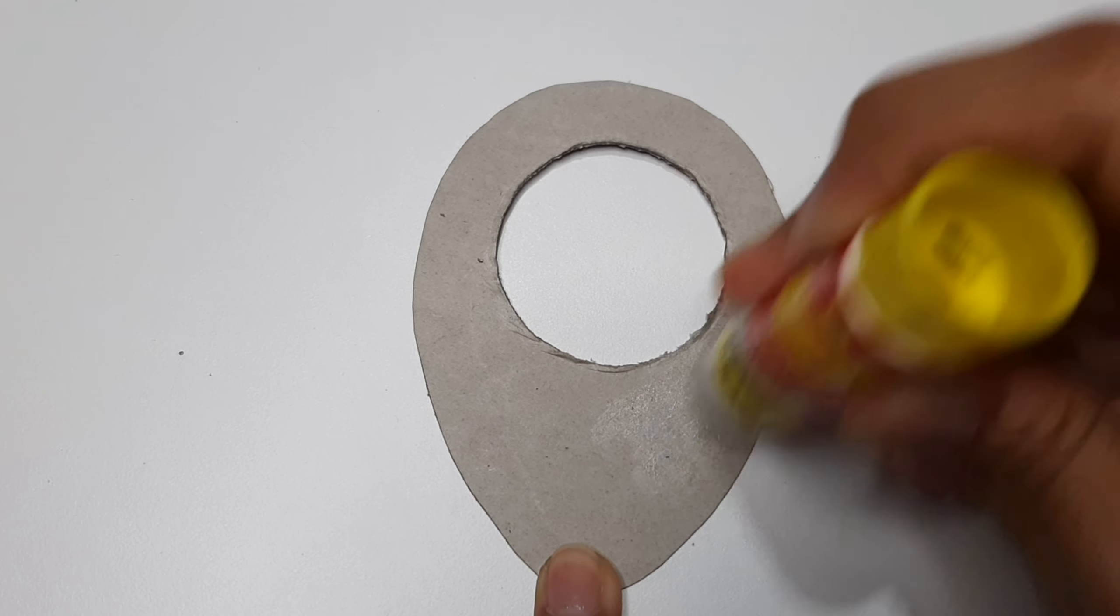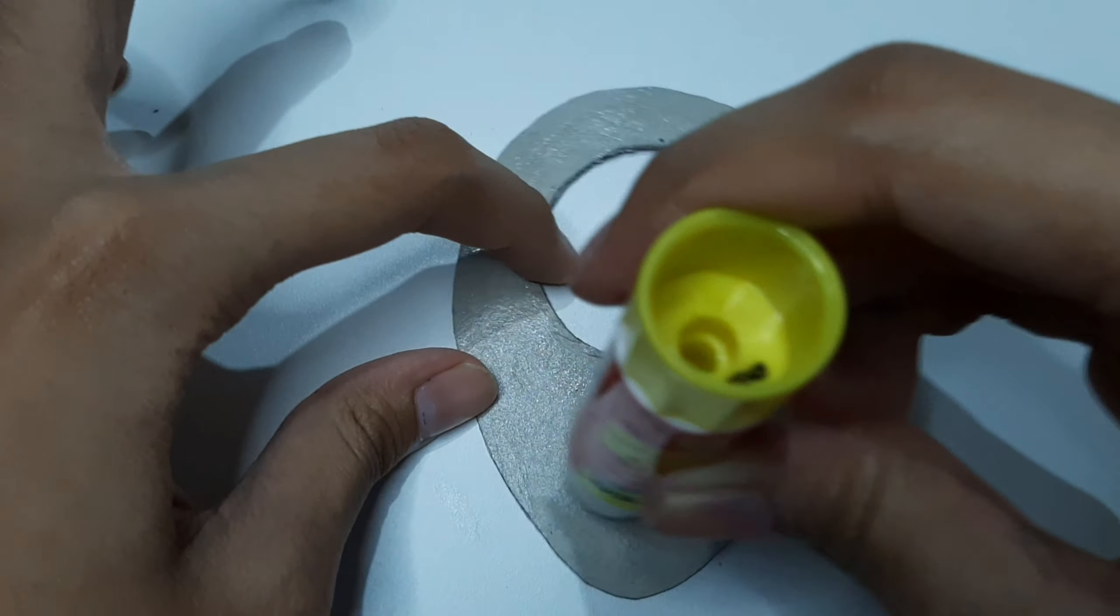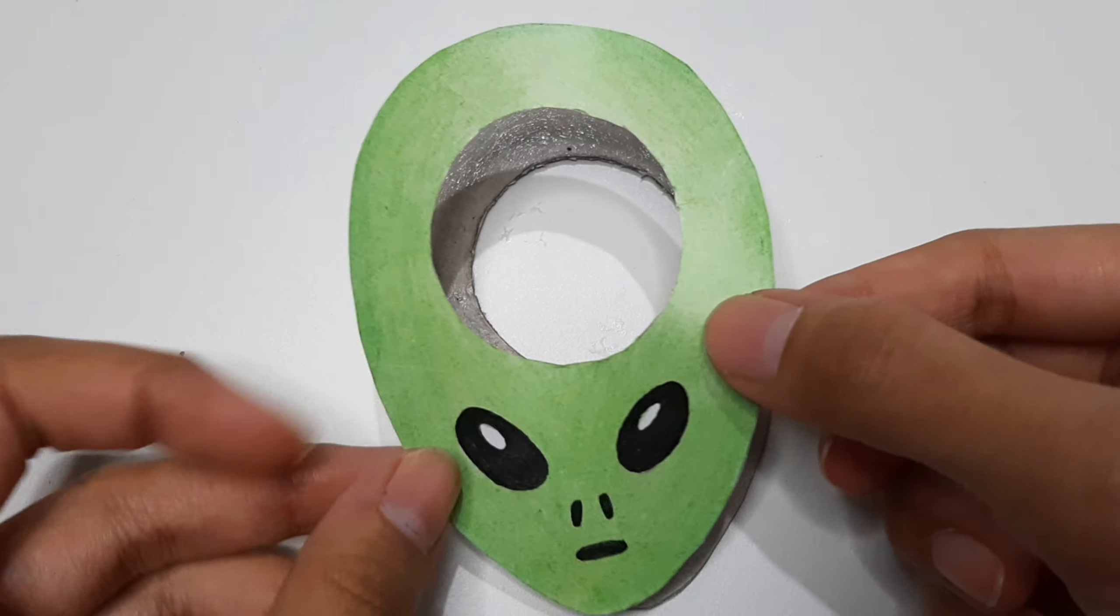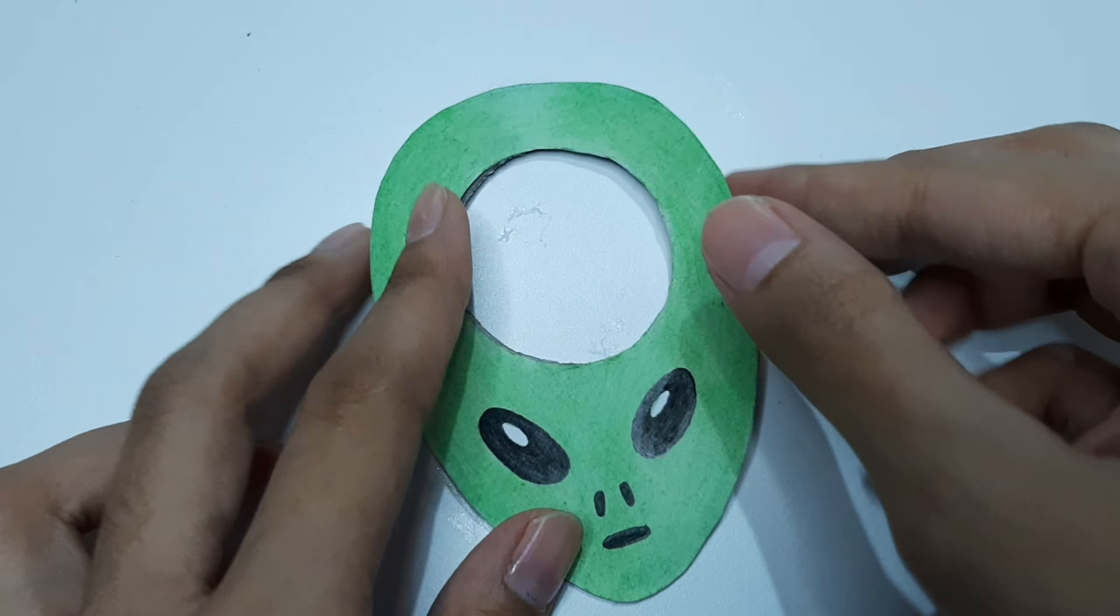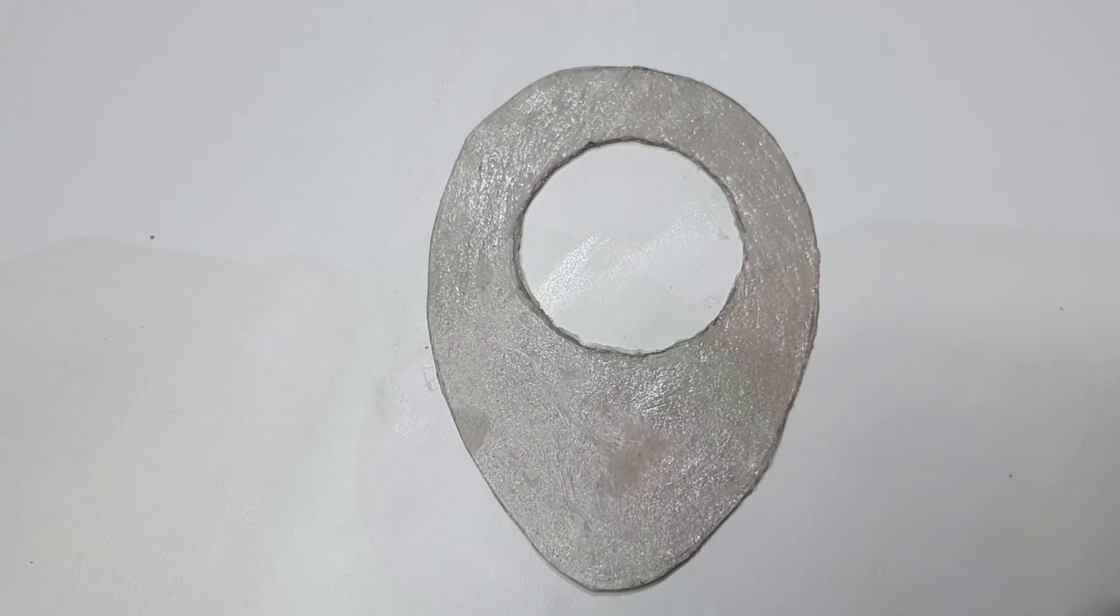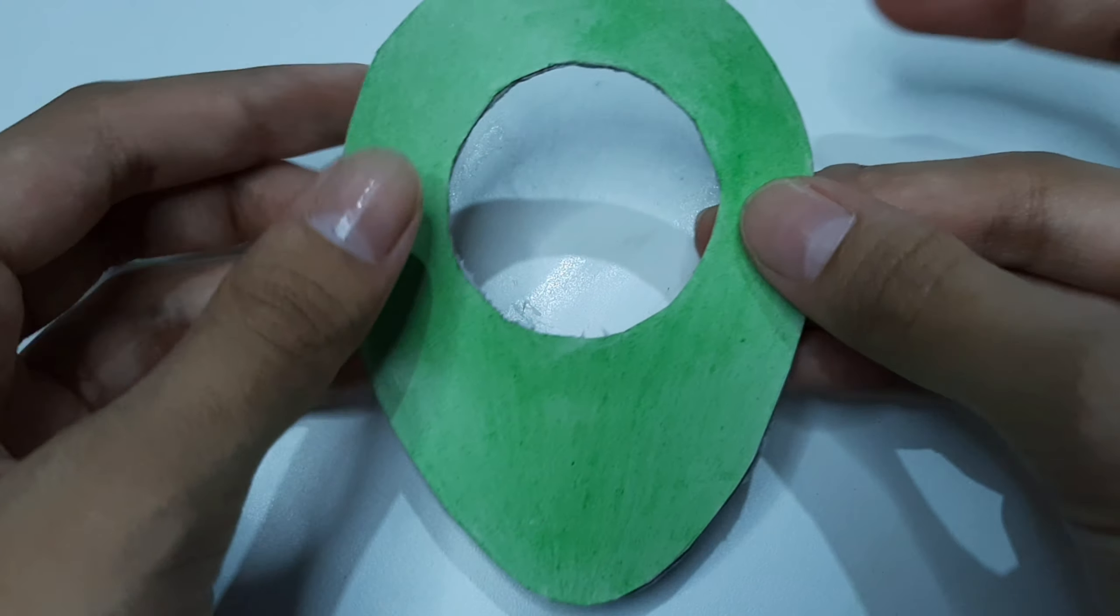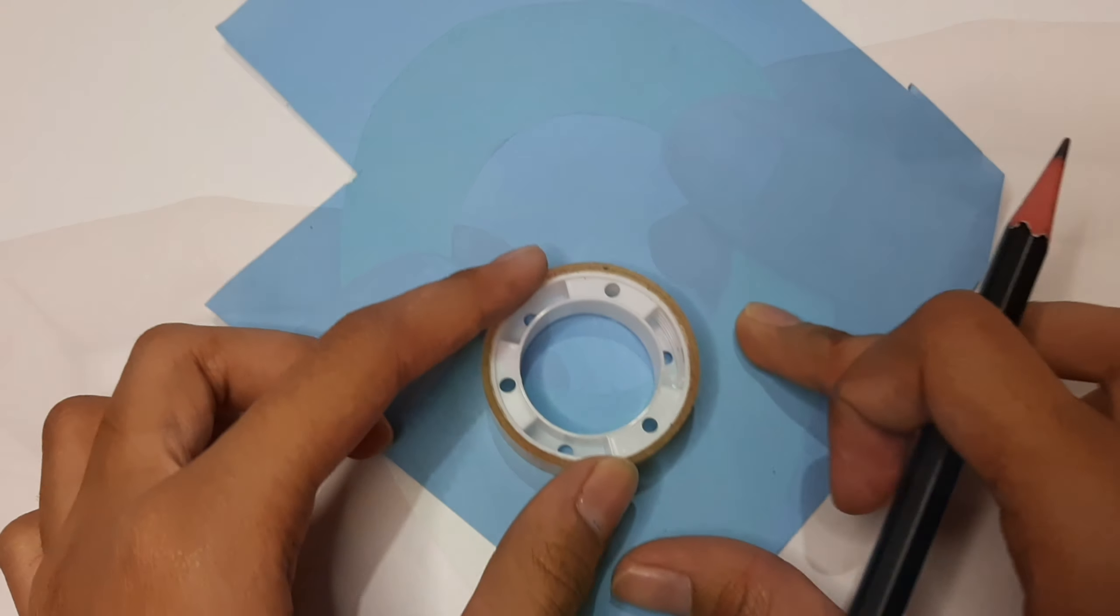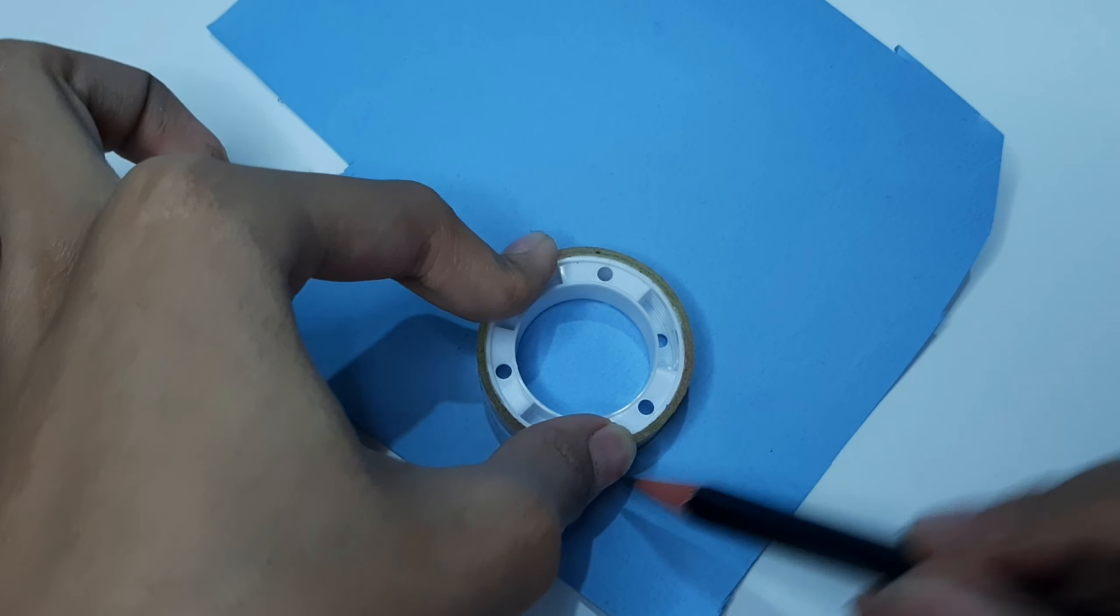Use the glue on the cardboard to hold the paper that was used for the cover of the cardboard. And do it again to another one. Take the slightly thick paper to make a circle and make it a little bigger.